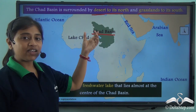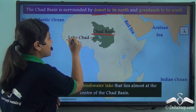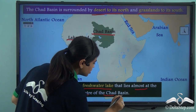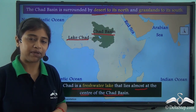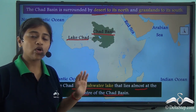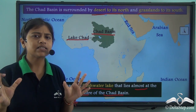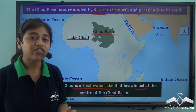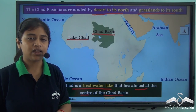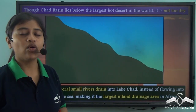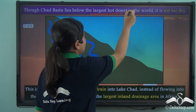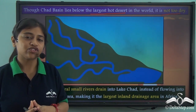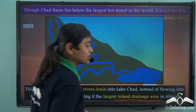The Chud Basin is centred around Lake Chud, a freshwater lake that lies almost in the centre of the basin. There is something interesting about the Chud Basin: even though it lies to the south of the largest hot desert in the world, it is not too dry. This is mainly because it is drained by several small streams that drain into the Chud Basin, making it the largest inland drainage in Africa.